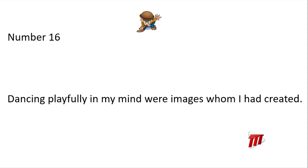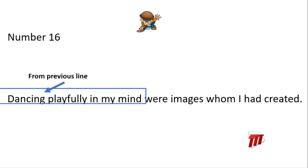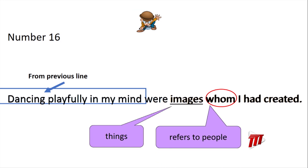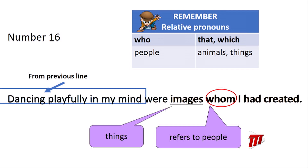Number 17: 'Dancing playfully in my mind were images whom I had created.' The error is 'whom,' because 'images' refers to things, not people. 'Who' and 'whom' are used for people; 'that' and 'which' are used for animals and things. So the correct answer is 'that' or 'which' — images that I had created, or images which I had created.